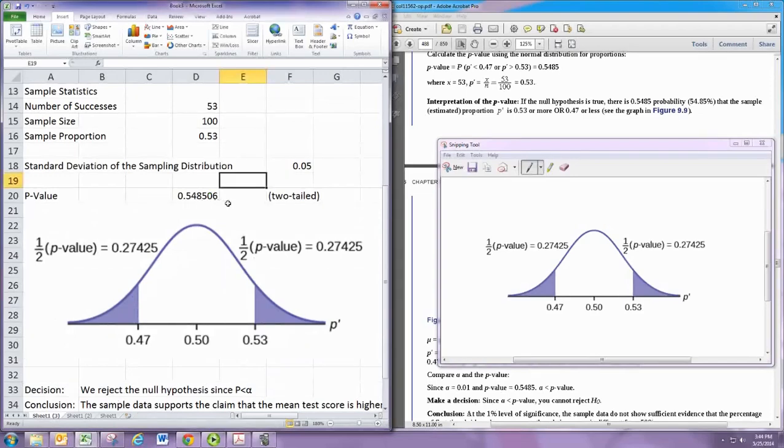P-value is 0.5485, alpha is 1%. So we'd say we failed to reject the null hypothesis, since p is greater than alpha.